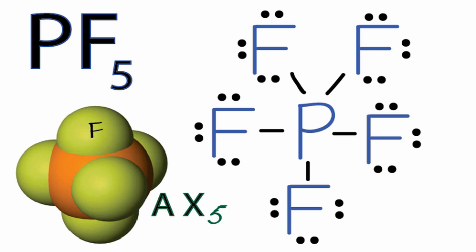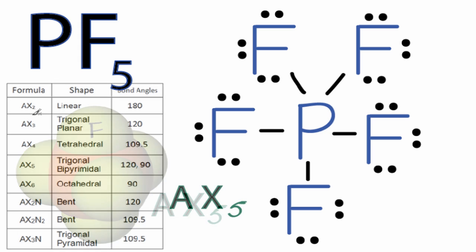You may have memorized that AX5 is a trigonal bipyramidal molecular geometry. But if not, you may be able to use a table. So going down our table, we have AX2, AX3, AX4, and there's AX5, and it's trigonal bipyramidal.